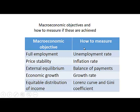How do we measure whether these objectives have been achieved or improved? To measure employment we use the unemployment rate. To measure whether price stability has been achieved we use the inflation rate. To measure external equilibrium we use the balance of payments. To measure economic growth we use the growth rate in GDP. And to measure the distribution of income we use the Lorentz curve and the Gini coefficient.